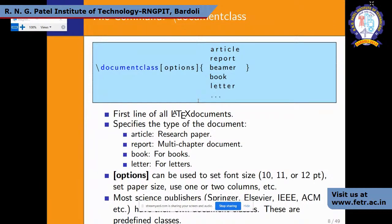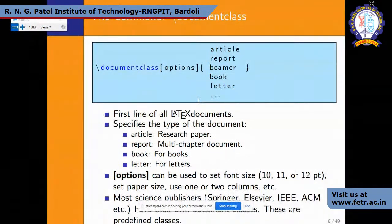The document class specifies what kind of document you are creating. If it's an article, you write \documentclass{article} — 'article' means a research paper. If it's a report, you can use chapter-based work. For a book or letter, you define accordingly. Options can be used to set font size: 10pt, 11pt, or 12pt. You can also mention page size and whether you want one or two columns by adding those options after the font size.